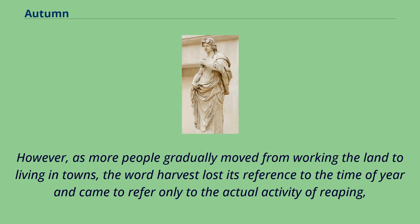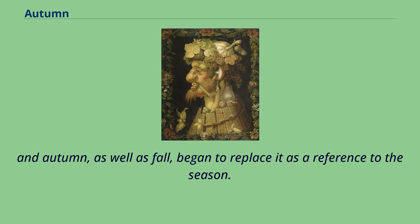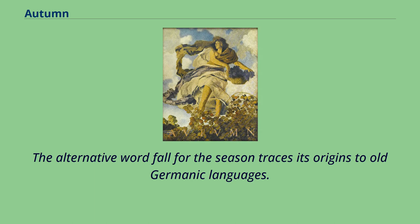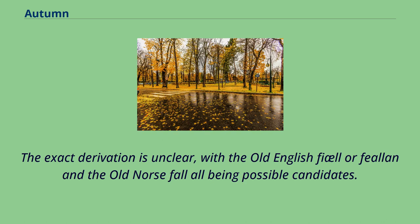However, as more people gradually moved from working the land to living in towns, the word harvest lost its reference to the time of year and came to refer only to the actual activity of reaping. And autumn, as well as fall, began to replace it as a reference to the season. The alternative word fall for the season traces its origins to old Germanic languages. The exact derivation is unclear, with the Old English fiel or fielan and the Old Norse fall all being possible candidates.